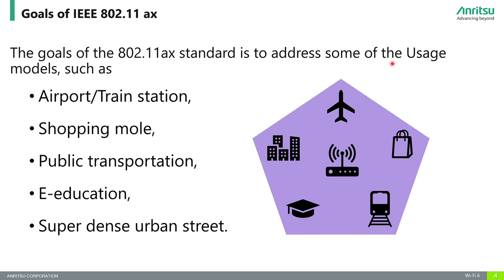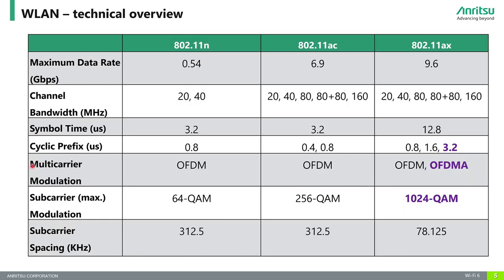Compared to previous IEEE WLAN standards, the AX standard was created to address specific usage models such as airports, trade stations, shopping malls, public transportation — buses, cars, and so on. It also has its place in e-education, and it covers super-dense urban street deployments — basically everywhere where many people simultaneously need reliable data connectivity. This reliability is achieved using the key features shown in the table in purple.